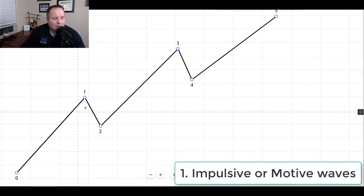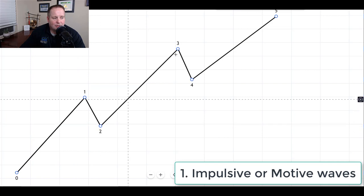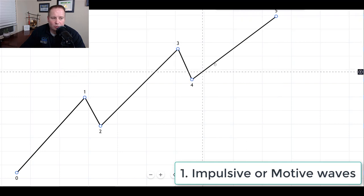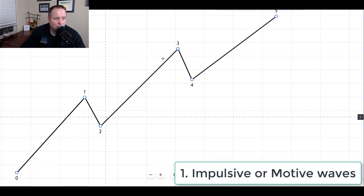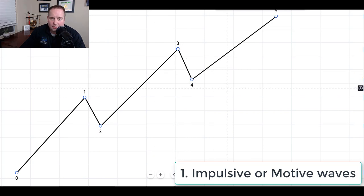This is what an impulsive wave looks like in a bullish market. You have waves one, three, and five that are on trend called motive waves. So we're in a bull market, so they're going up. And then you have two counter trend waves, waves two and waves four, that go against the trend of the market. So they are going down.